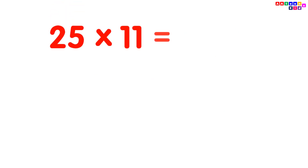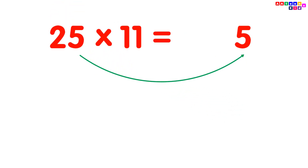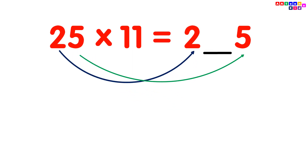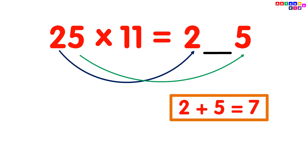75 multiplied by 11. Then add the digits: 2 plus 5 equals 7. Put the 7 between digits 2 and 5, and you will get your answer 275.